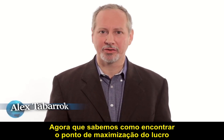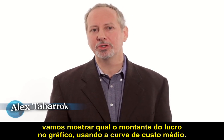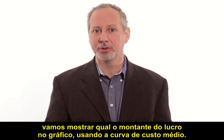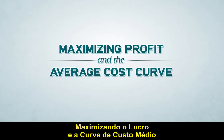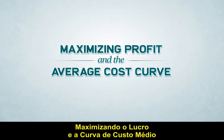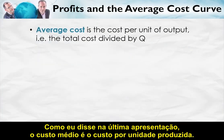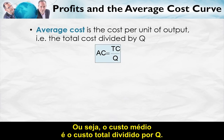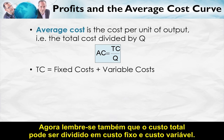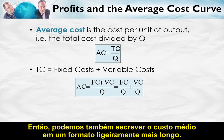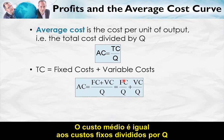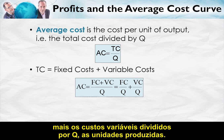Now that we know how to find the profit maximization point, we're going to show the amount of profit on the diagram using the average cost curve. As I said in the last lecture, average cost is the cost per unit of output — that is, average cost is total cost divided by Q. Remember also that total cost can be broken down into fixed cost plus variable cost, so we can write average cost as fixed cost divided by Q plus variable cost divided by Q.